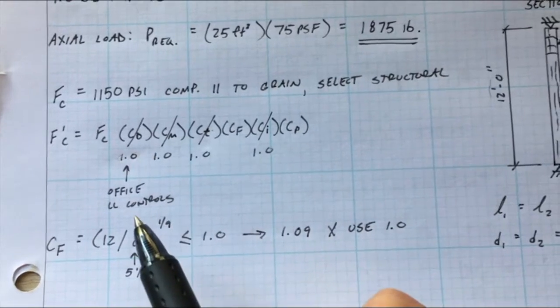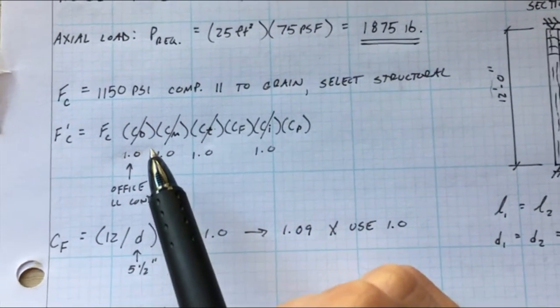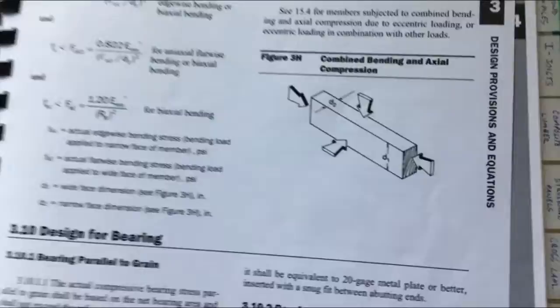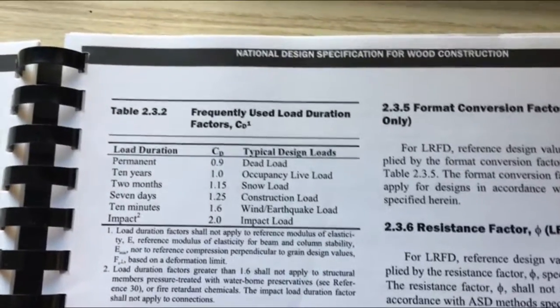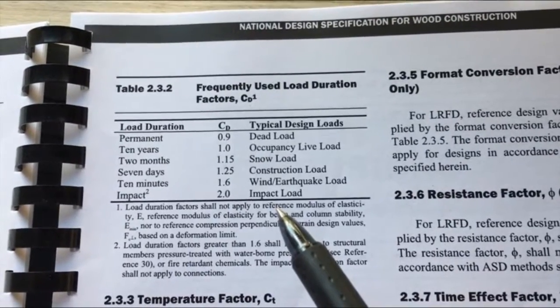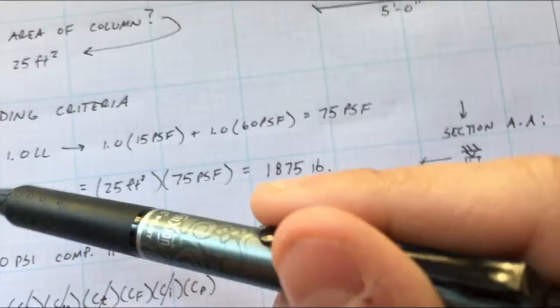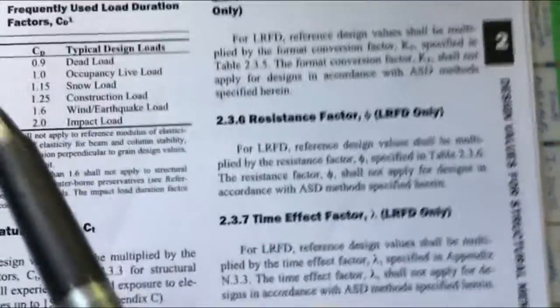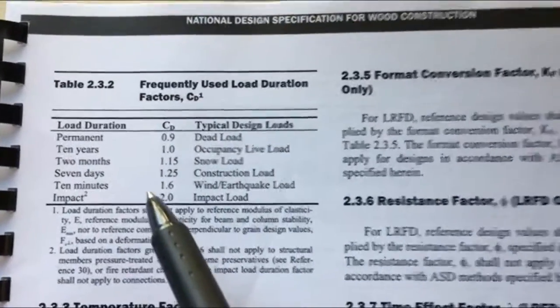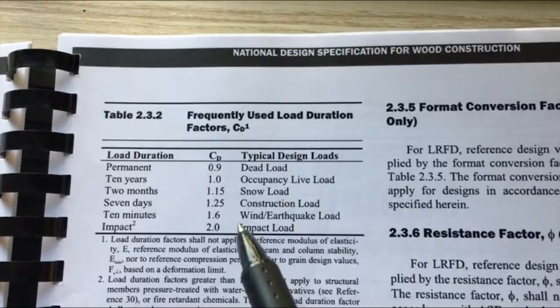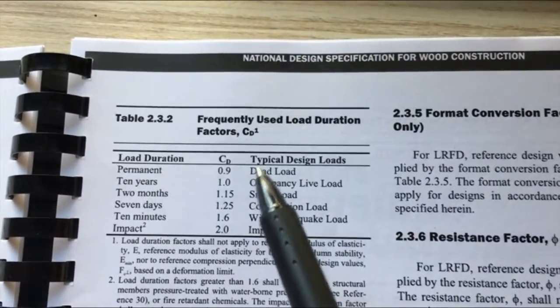CD is 1.0 and that's because the office live load controls this loading criteria. If we all remember, we're going to go back towards the beginning to table 2.3.2 and the loading criteria equation, whichever load, this one we have live load and this one we have dead load, whichever one of those loading criteria gets us a larger CD value we get to use that.